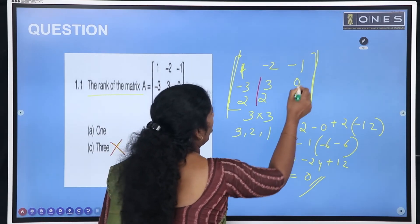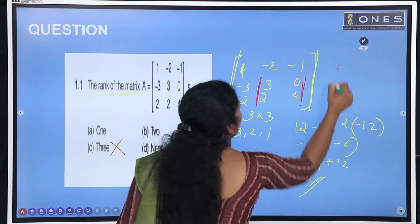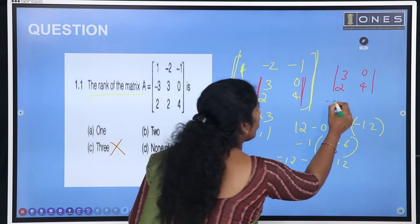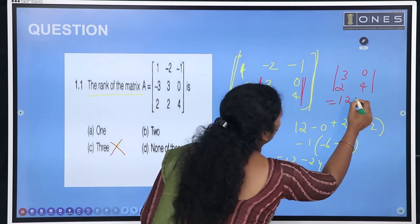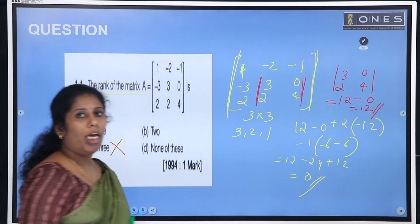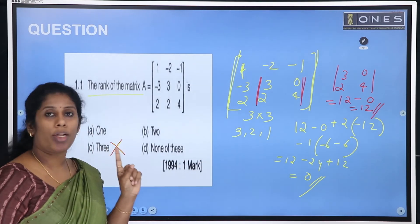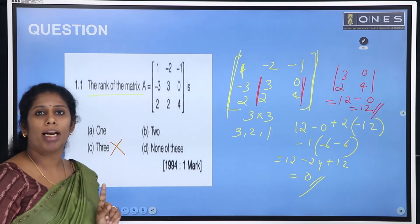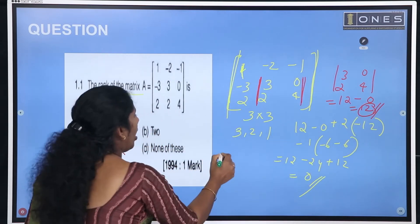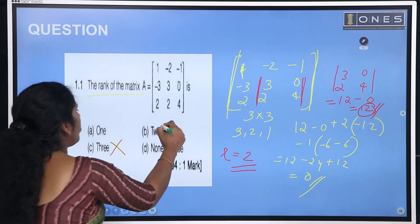We have two remaining options: 1 and 2. Let's take a 2 by 2 minor. Taking the submatrix with entries 3, 4, 0, 2, the determinant is 12 minus 0, which equals 12. This is non-zero, so there is at least one non-zero minor of order 2. Therefore, the rank of that matrix is equal to 2. The answer is option B.